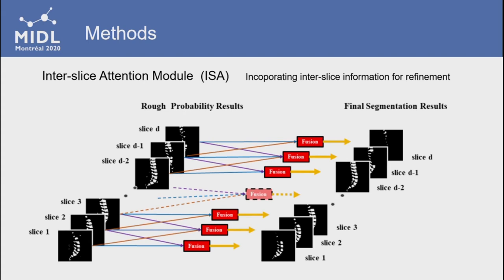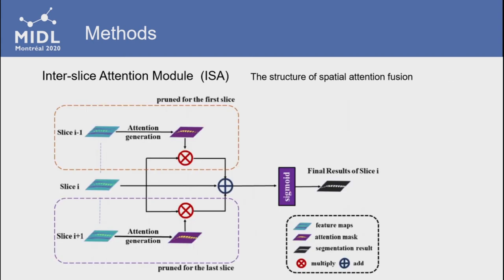The overall structure is shown in the figure. For each slice, its adjacent slices are incorporated for the refinement so as to get the final segmentation results. For the first and the last slice with only one adjacent slice, the process is halved. The feature maps are processed using 1x1 convolution and sigmoid to generate the attention masks, and then the masks are fused with the feature maps of the slice at hand. This approach could be considered as using the information of adjacent slices as a shape prior for the segmentation of the slice at hand.